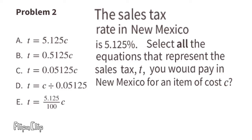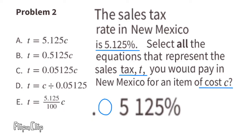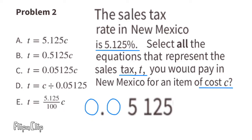Problem 2: The sales tax rate in New Mexico is 5.125%. Select all the equations that represent the sales tax t you would pay in New Mexico for an item of cost c. To convert, we remove the percent sign and move the decimal two places to the left, making it 100 times smaller. The number now reads 0.05125, the decimal equivalent of 5.125%.